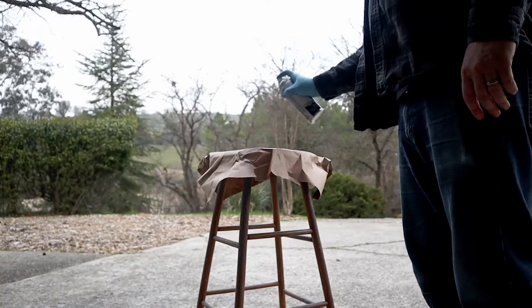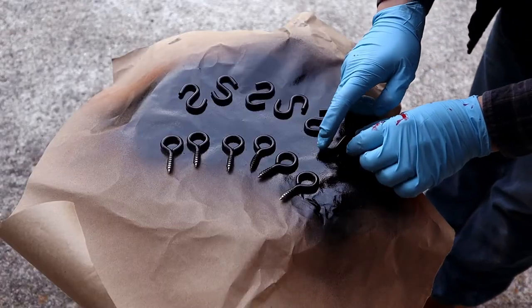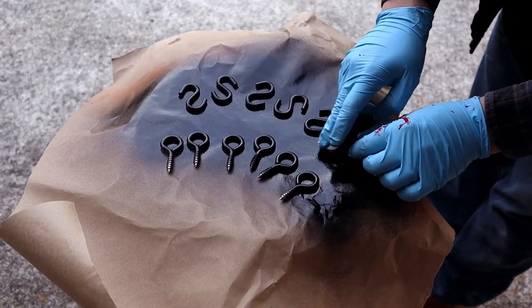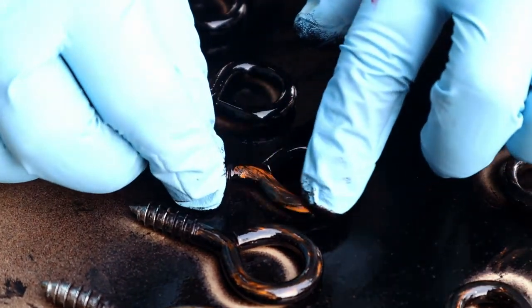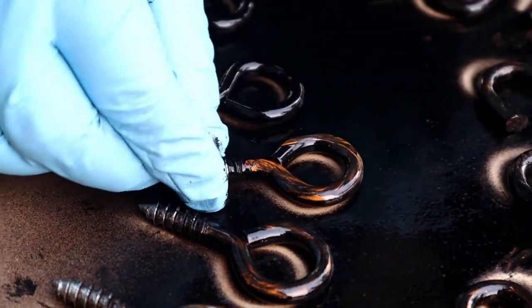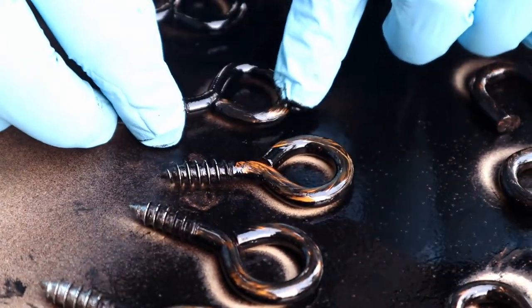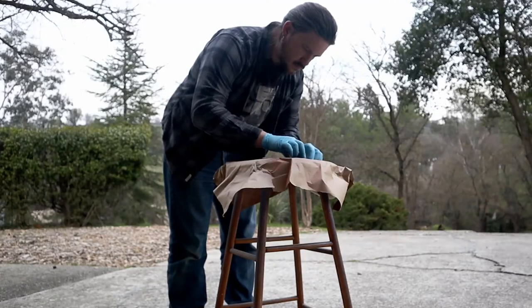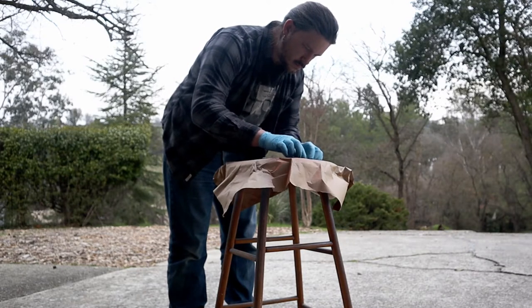To get that oil rubbed look, I used a gloved finger to gently swirl the paint which creates these orangey-gray streaks in the black paint. It's not a perfect recreation of the look, but from a distance and for the price, this technique is really hard to beat.